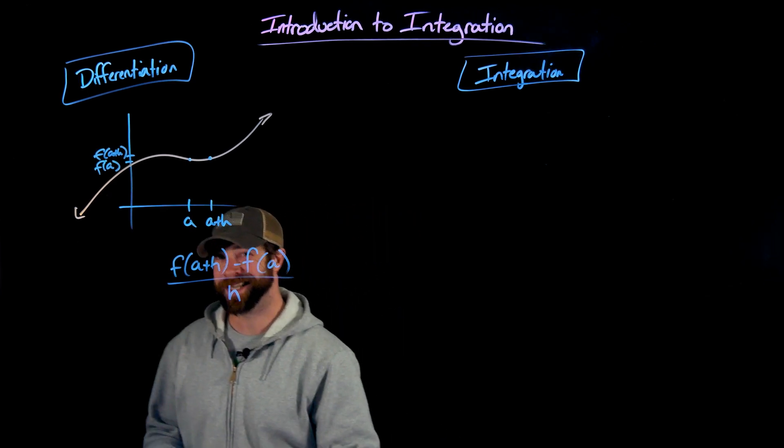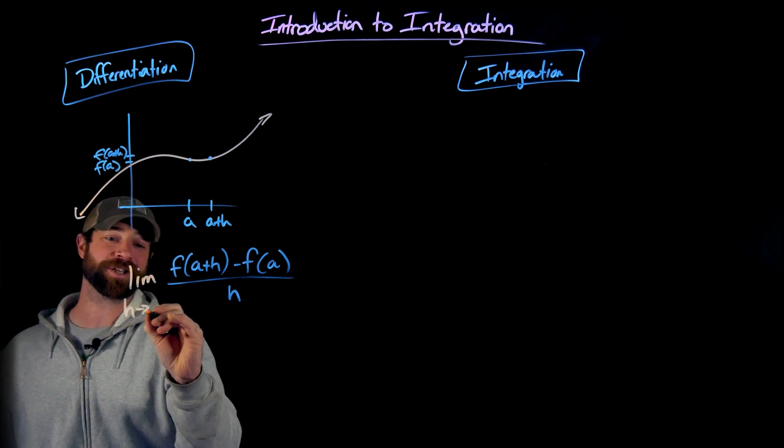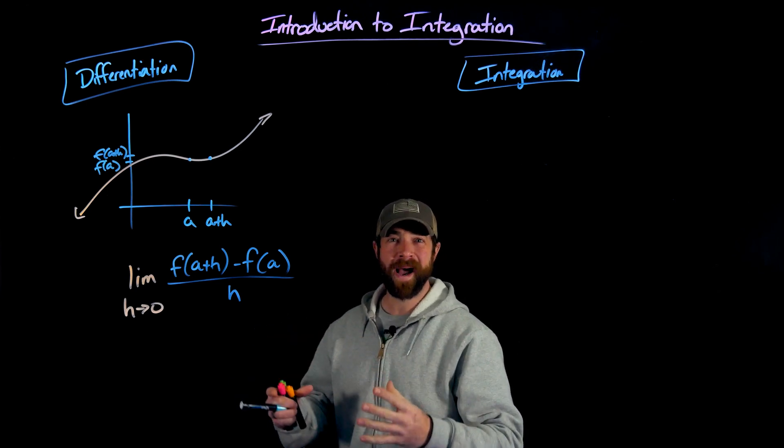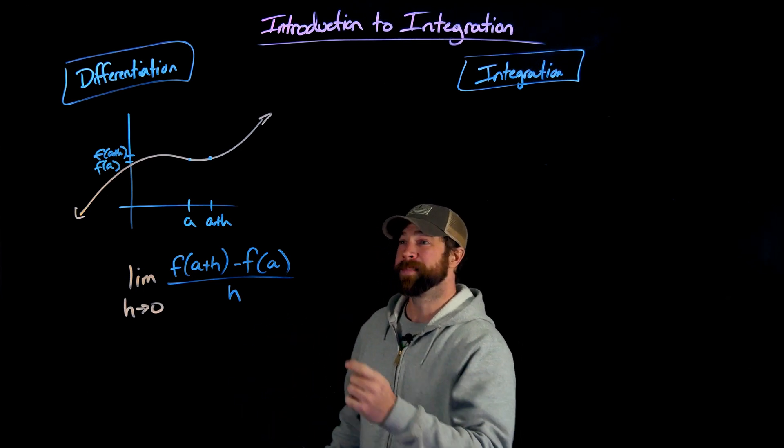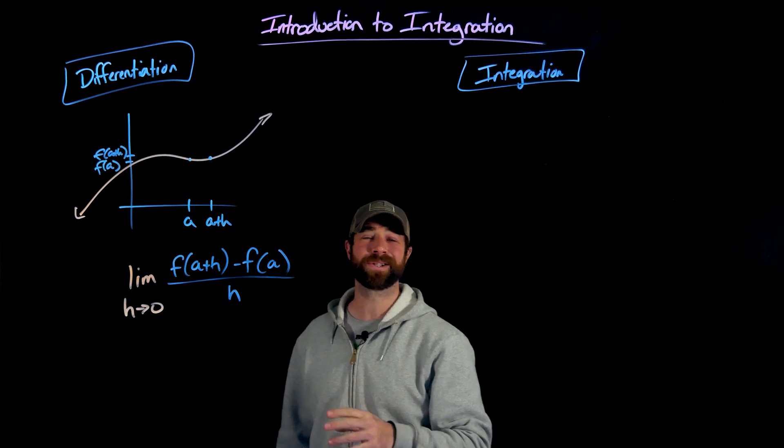But when we introduce the idea of limit to this, specifically the limit as h goes to zero, this goes from talking about this secant or average slope or rate of change and tells us about the instantaneous rate of change and the slope at a.